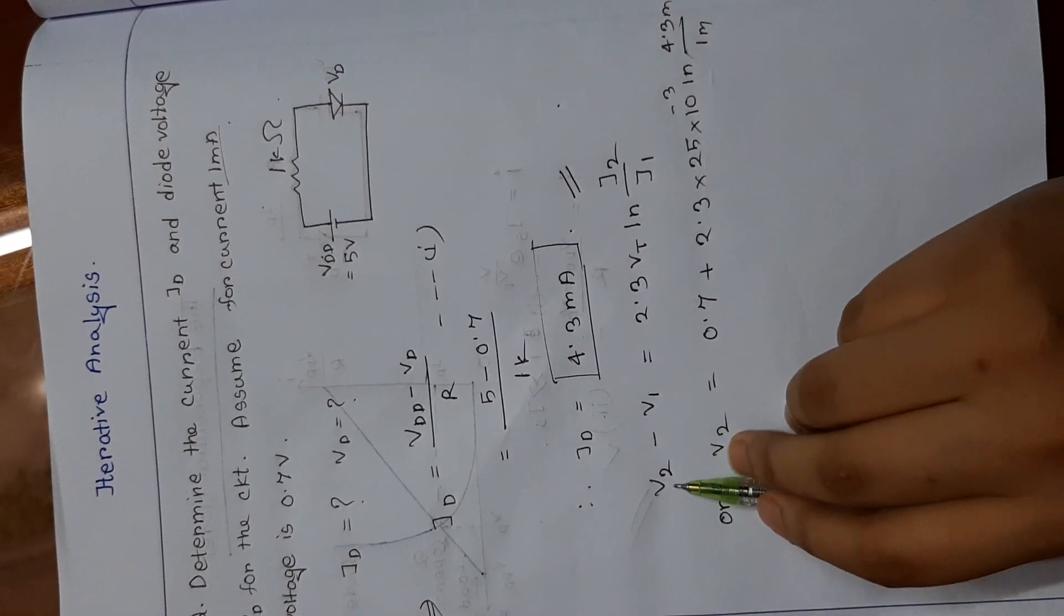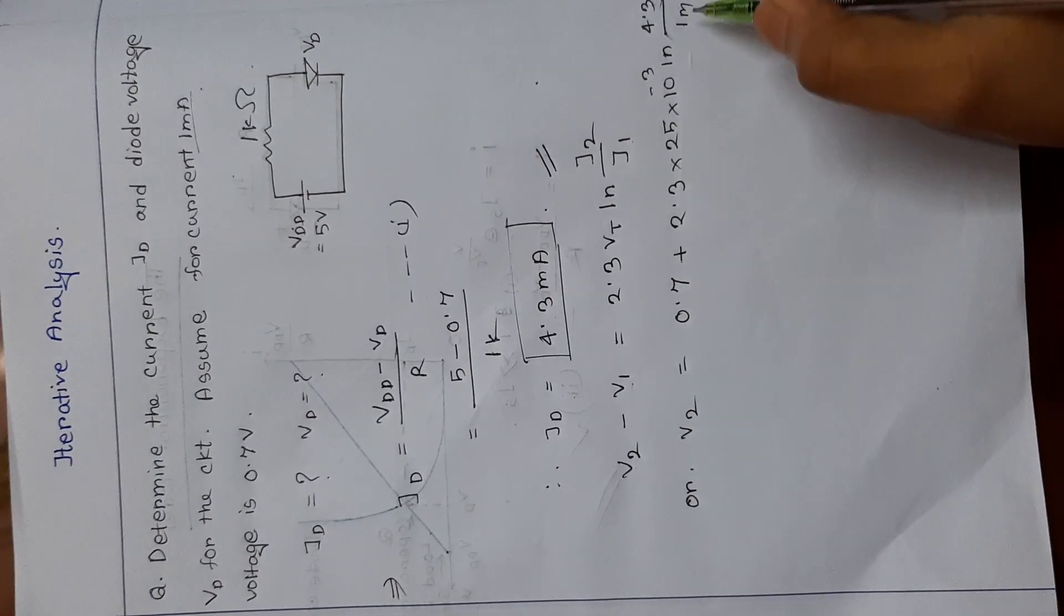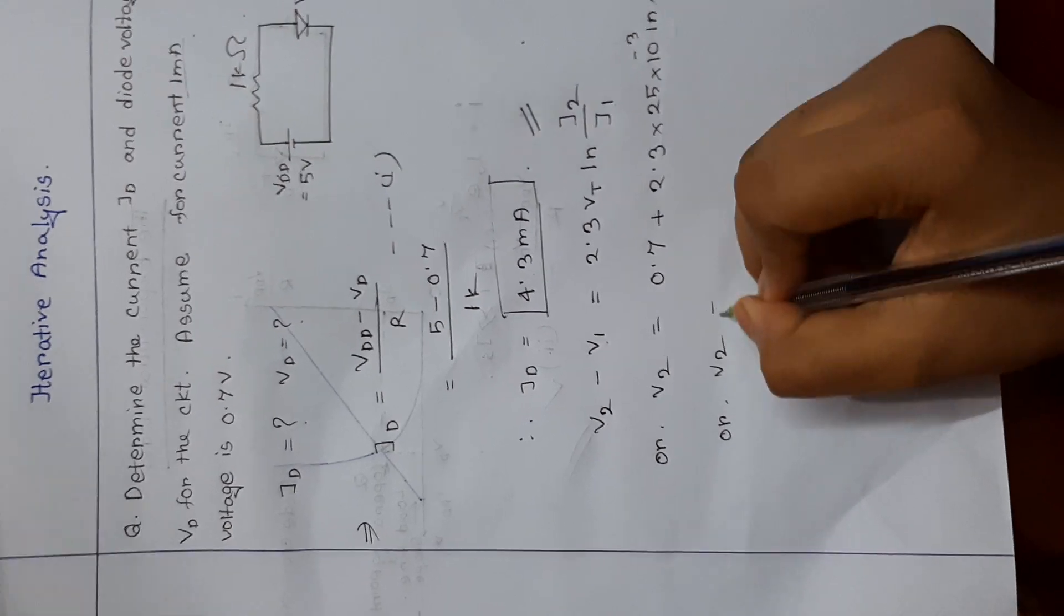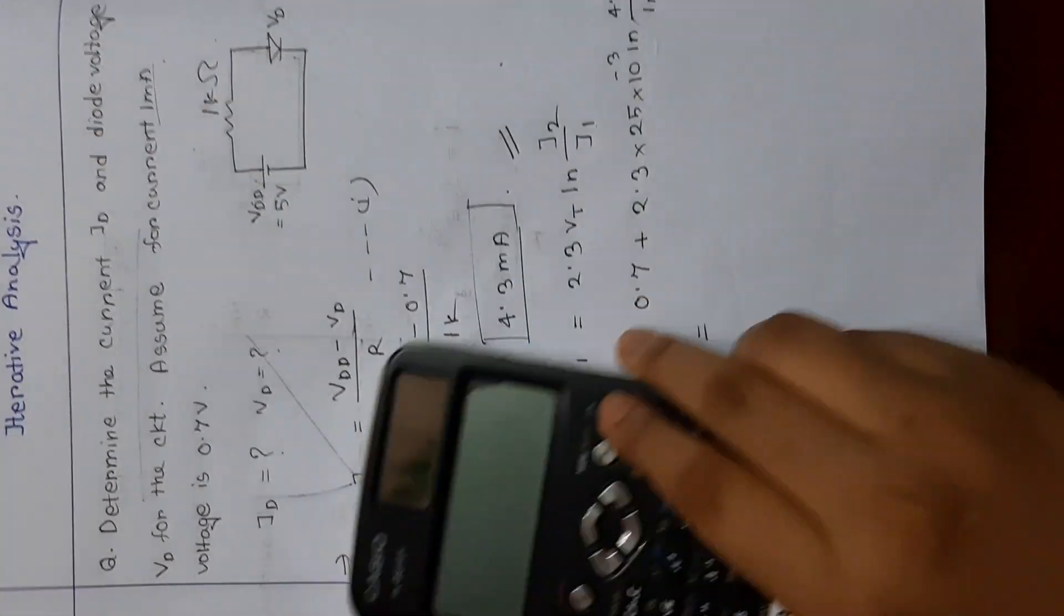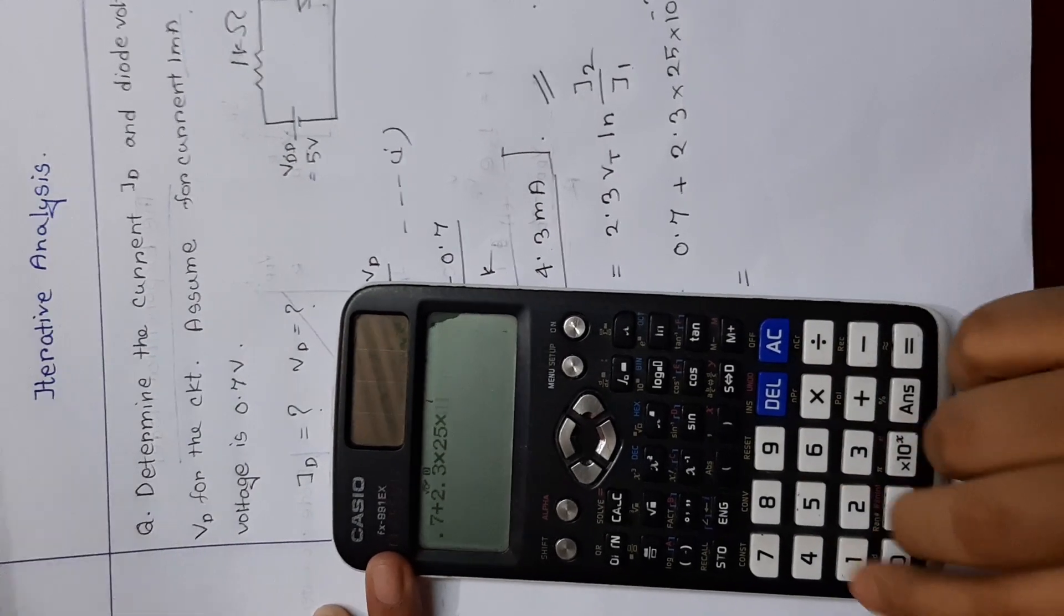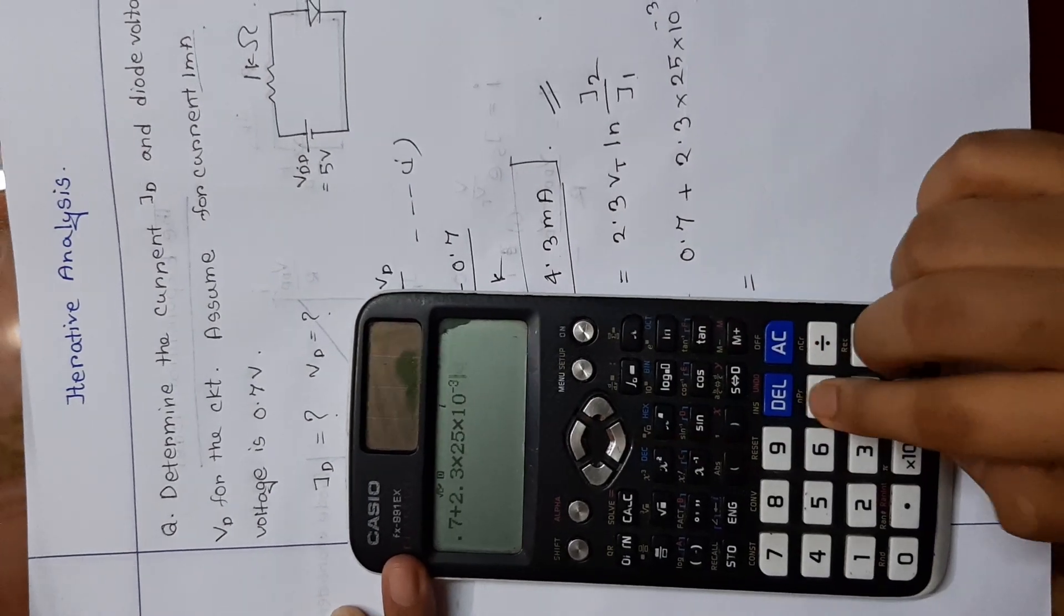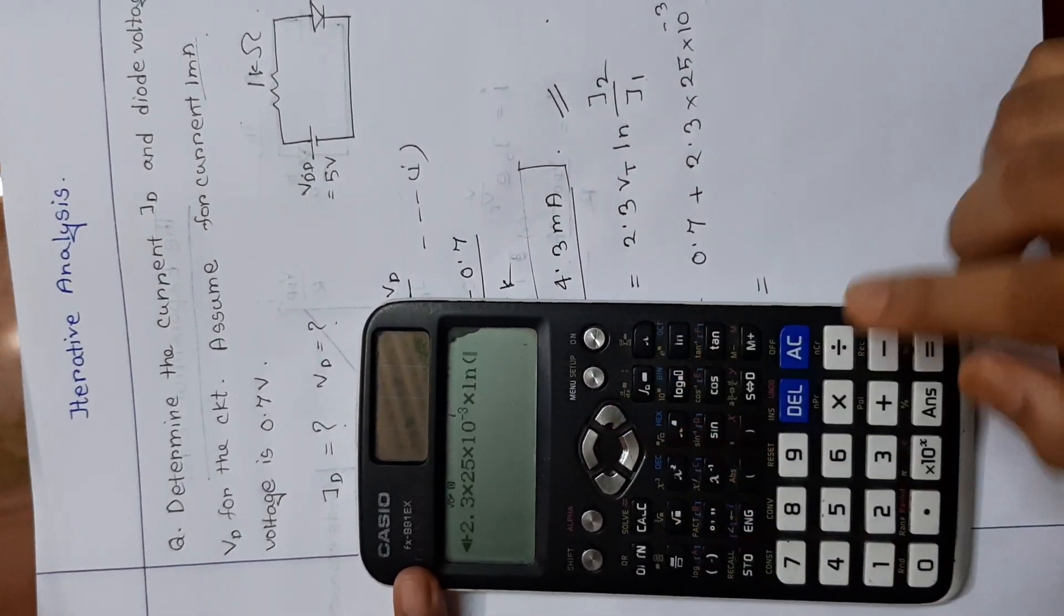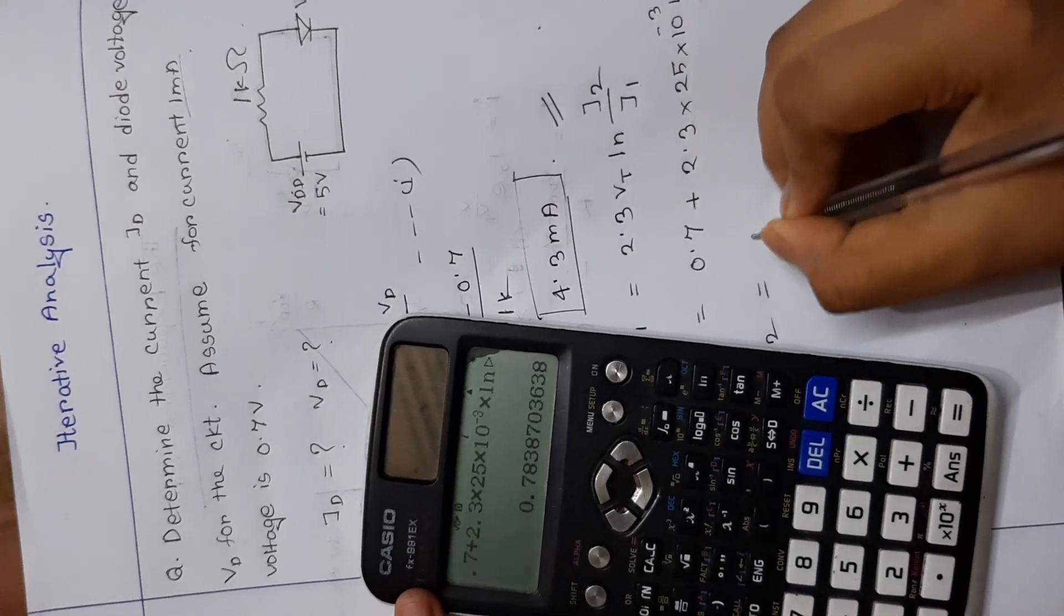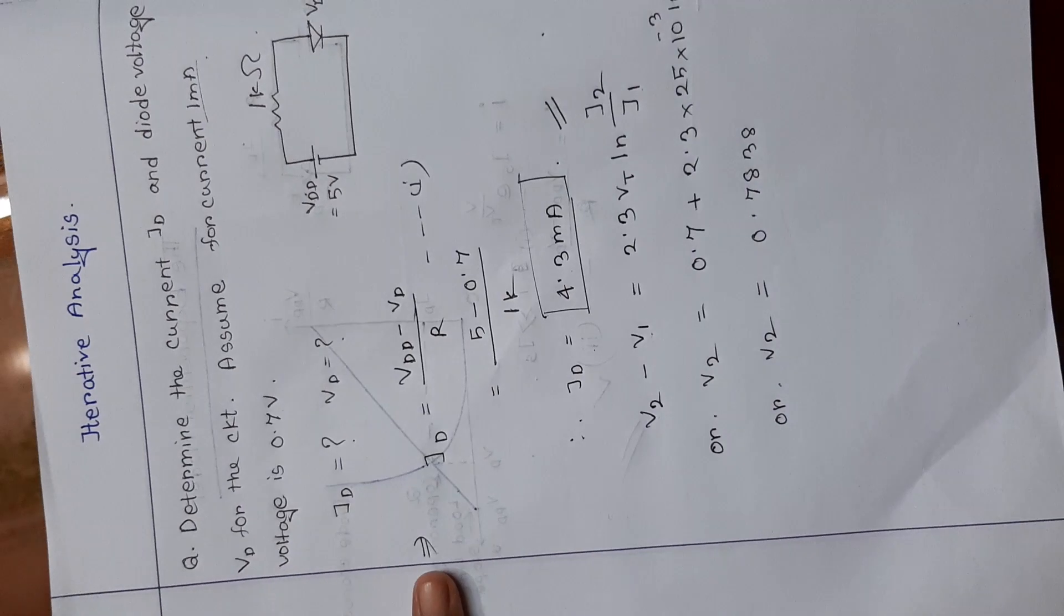So we can see for V2 it is I2, and for V1 the I1 is 1 milliampere. If we solve this equation, then we can find V2 is equal to 0.7 plus 0.0838 volt.